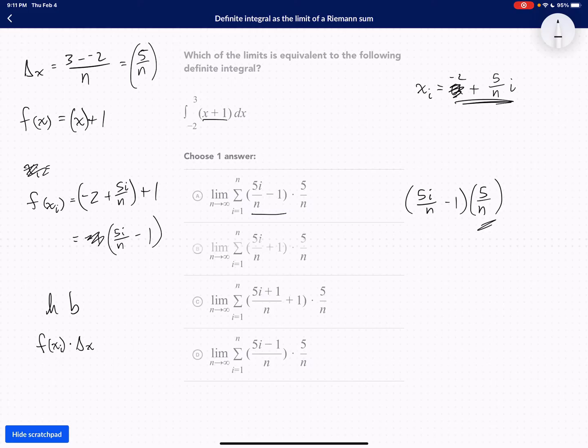Well, actually, this one, no, this one wouldn't work. Because if we do find common denominators, then it would be 5i minus n over n. So it wouldn't be that one. So it looks like our answer is A.